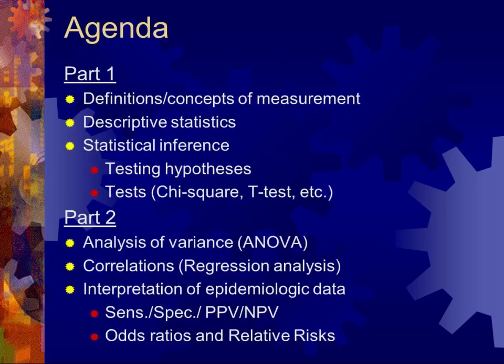When we met last in Part 1, our agenda was, as noted in the first half of this slide: we talked about definitions and concepts of measurement, the basics of descriptive statistics, and then talked specifically about hypothesis testing, particularly as it related to two types of basic tests — chi-square tests and t-tests.